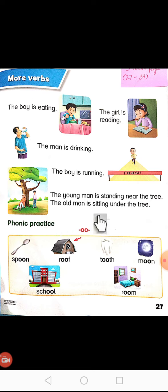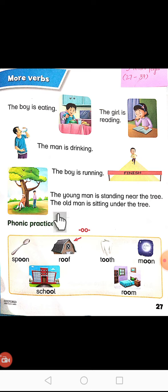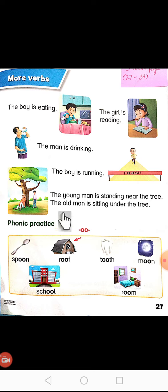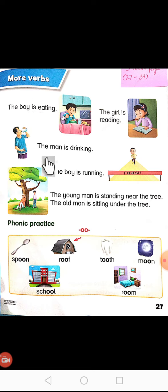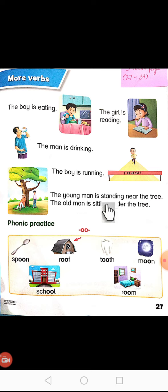The old man is sitting. Old man means buhtha aadmi. Picture mein dekhe: The old man is sitting under the tree. Buhtha aadmi drukht ke niche baitha hai. Review: The boy is eating. The girl is reading. The man is drinking. The boy is running. The young man is standing near the tree. The old man is sitting under the tree.